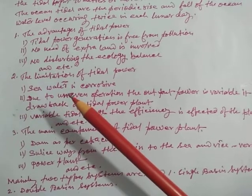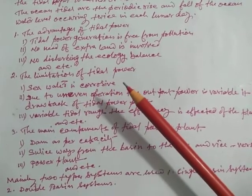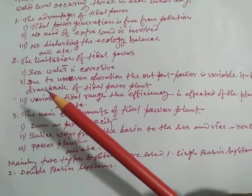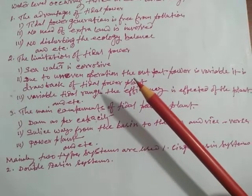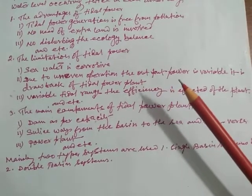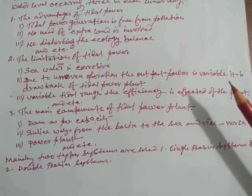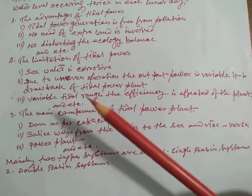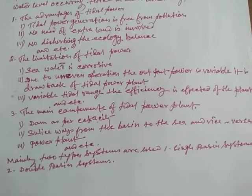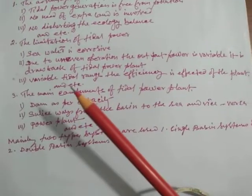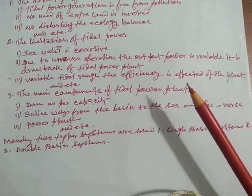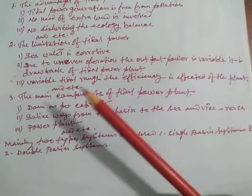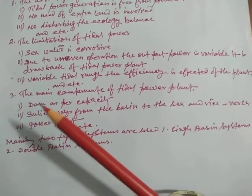Number two: limitations of tidal power. Number one: seawater is corrosive. Number two: due to uneven operation, the output power is variable—it is a drawback of the tidal power plant. Number three: variable tidal ranges—the efficiency is affected of the plant, etc.